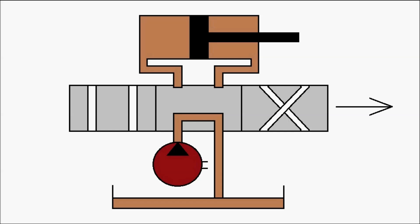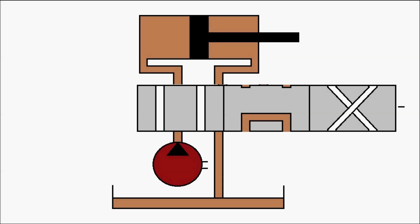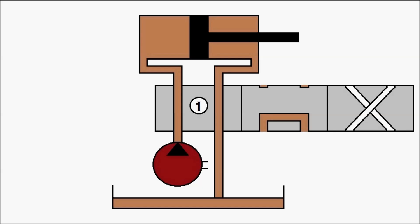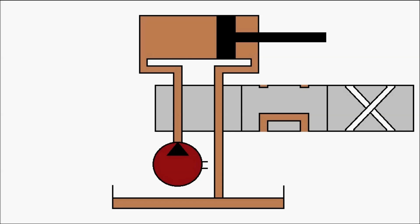Now let's move the direction control valve towards the right. Section one connects between the pump and the hydraulic ram. You can see the flow from the hydraulic pump — the arrow mark shows it moving through the hose directly towards the head side of the hydraulic ram. It pressurizes the hydraulic piston at the head side, resulting in the piston moving back towards the rod side. The oil from the rod side then moves through the return line and goes back towards the reservoir.